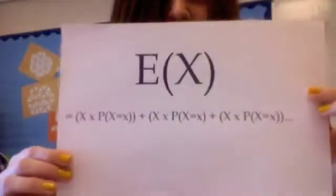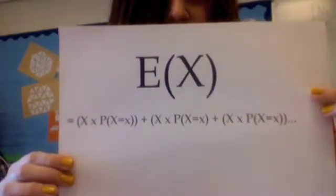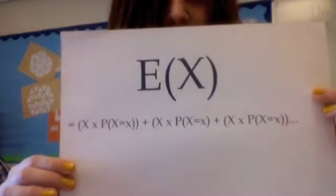You can find the expected value with the simple sum. E(x) equals x times P(x), plus x times P(x), plus etc.